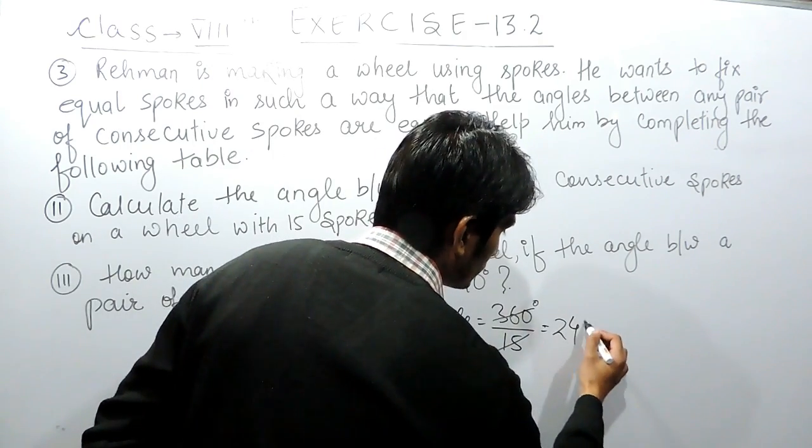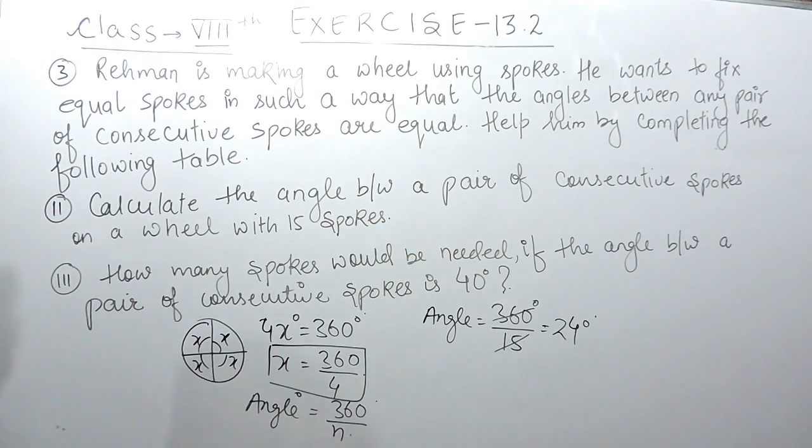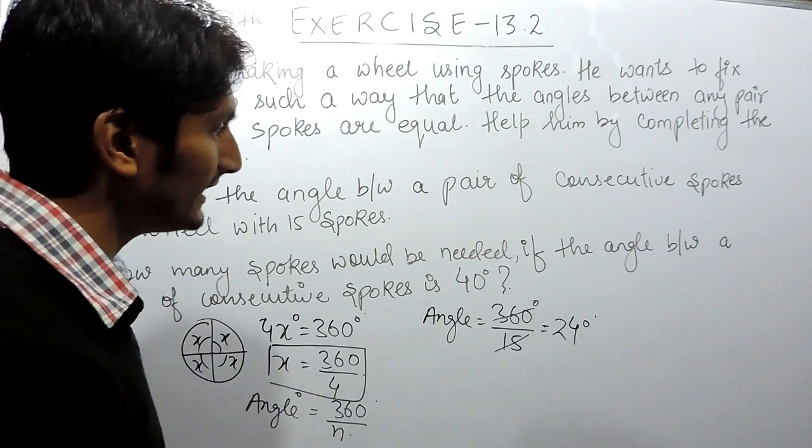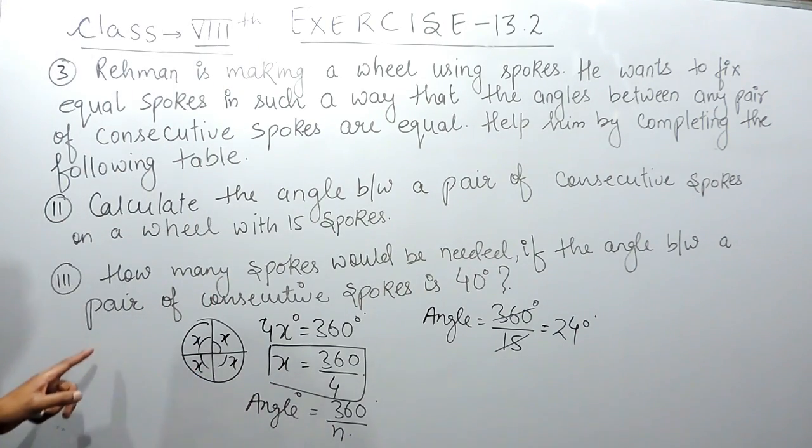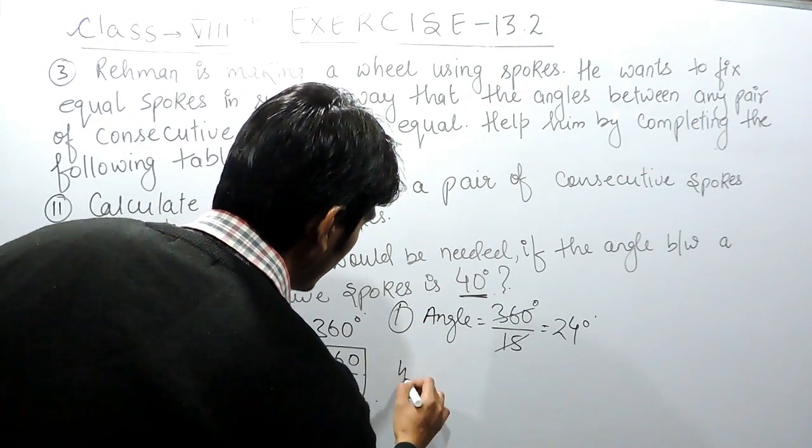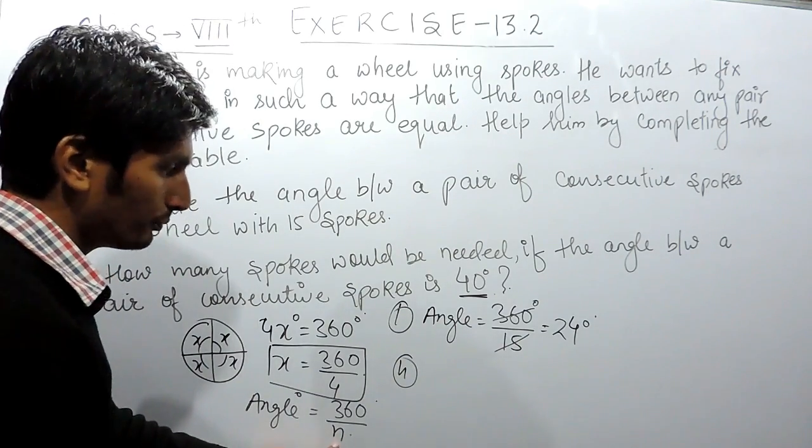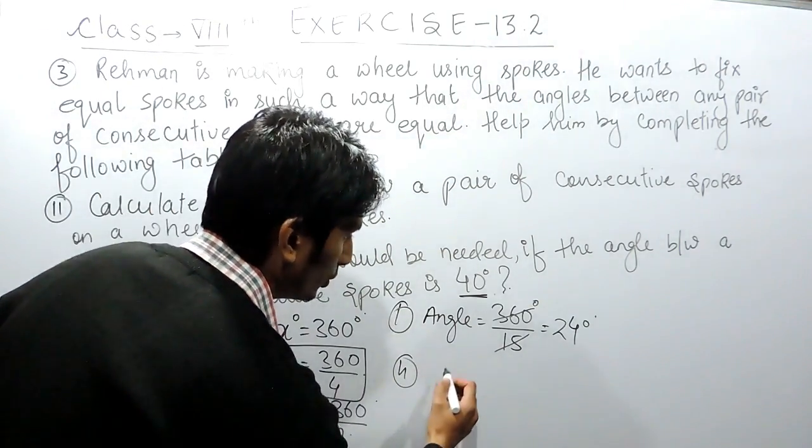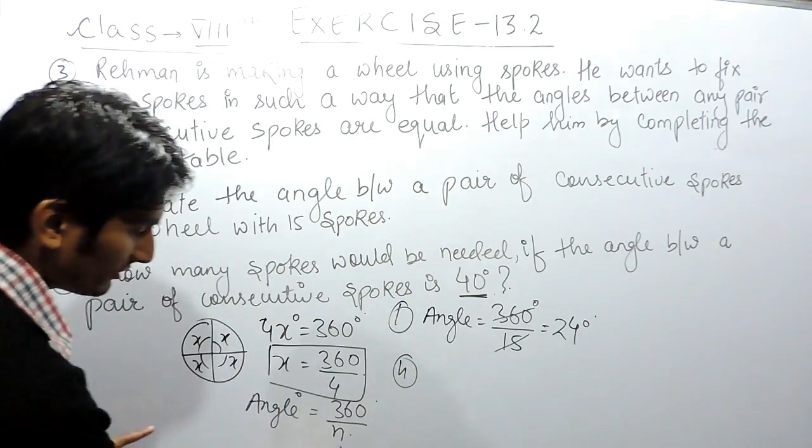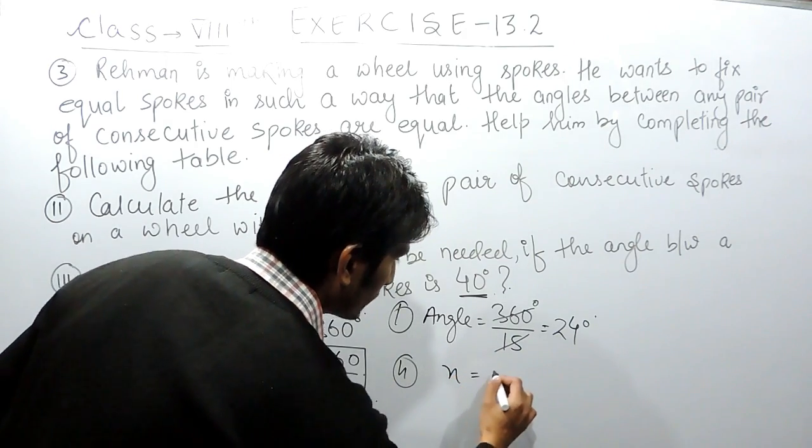In the second part, you have to find how many spokes would be needed if the angle between the pair of consecutive spokes is 40 degrees. So here, you have to find the number of spokes when angle is given to you. If I shift this value here and this value here, the new formula will be: the number of spokes equals 360 degrees upon the angle.